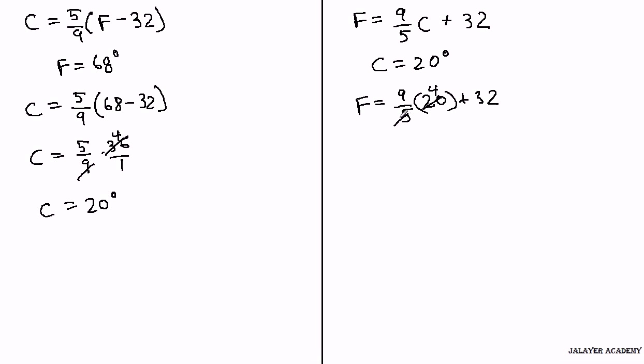Alright, there's one 5 in 5 and four 5's in 20. So we're left with just a 4, and we got 36 plus 32, and that equals 68 degrees.